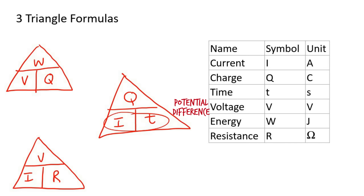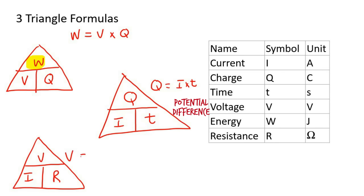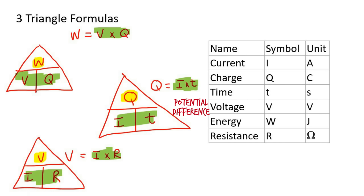Let me show you how to use these triangle formulas. Let's say you're looking for W — W is at the top. When you're looking for the one that's at the top, you just multiply the ones that are at the bottom together. So if we use this one over here, you could say I multiplied by T. Take the top one and multiply the two bottom ones together. So whenever you're looking for the top one, you're just going to multiply the two bottom parts together — that's how those formulas work. The top one is always equal to the bottom two multiplied together.